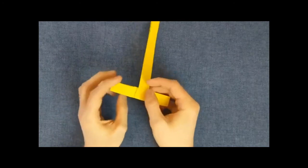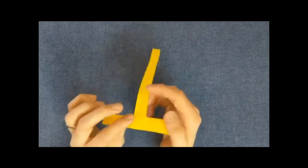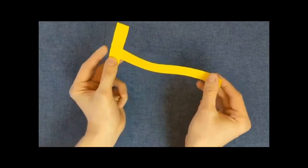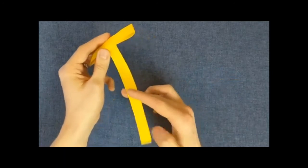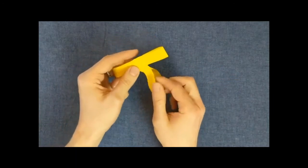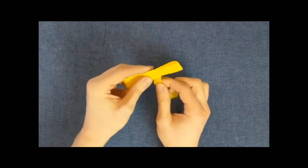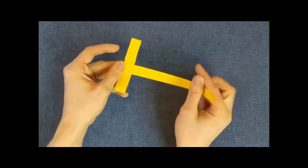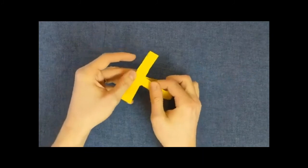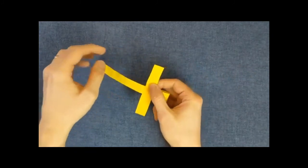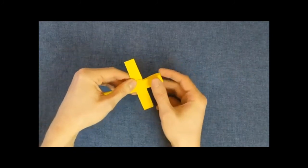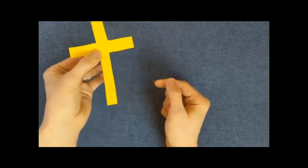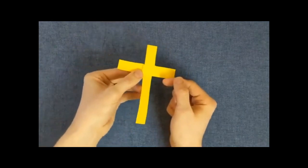And now the next step is really simple. We're going to take this vertical piece here, this vertical strip, and we are going to thread it through. And that will form the vertical bar of the cross. Now I've done that the wrong way. I want to turn it over and thread it through. And you will see that we have now formed a paper palm cross using no glue.